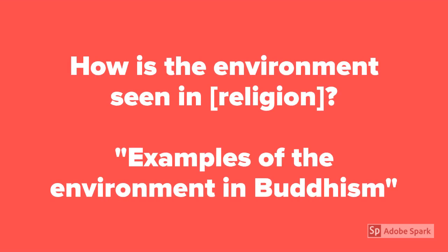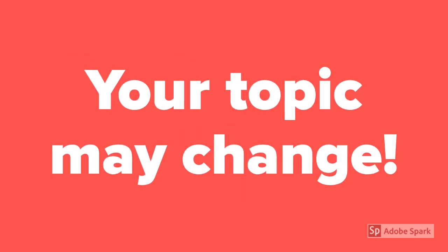Here's another question you can ask yourself: how is the environment seen in Buddhism, Hinduism, Islam, etc.? Your answer to that question becomes your topic for your research paper. So perhaps your topic is examples of the environment in Buddhism. Yesterday I asked you to choose a religion to focus on. You might find it difficult to relate geography or the environment to that specific religion, so if you haven't been able to find anything online, your topic may change and that's okay. I think we can find a little bit of geography in each religion, so I'll be here to help you refine and choose your topic.